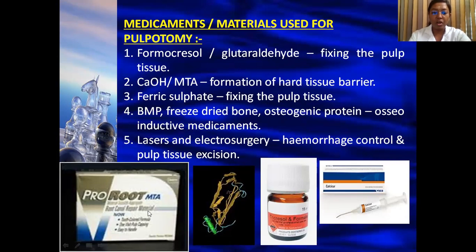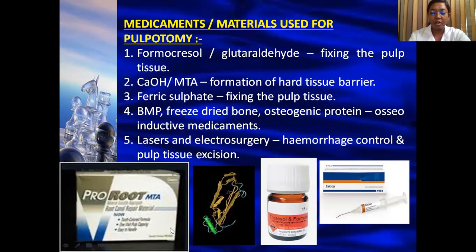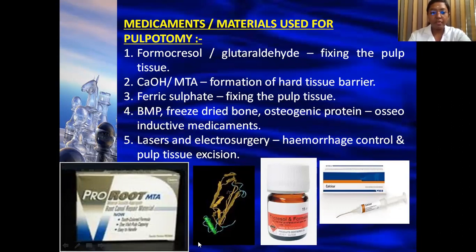The picture shows ProRoot MTA, available as a powder in sachet form mixed with a special liquid provided by the manufacturer on a glass slab to obtain a wet sand-like consistency. Also shown are bone morphogenic protein, formocresol, and calcium hydroxide, which is available directly in syringe form and can be syringed directly into the pulp.